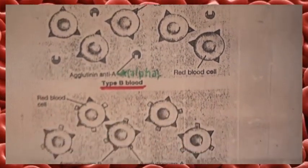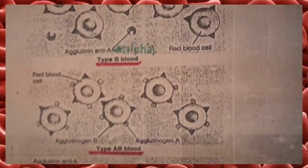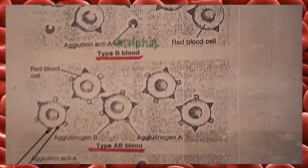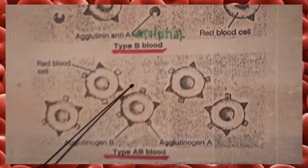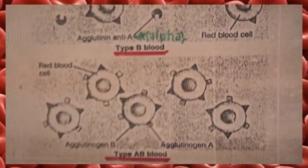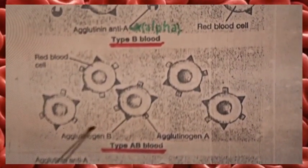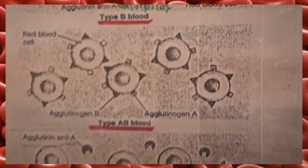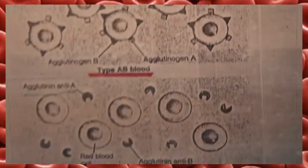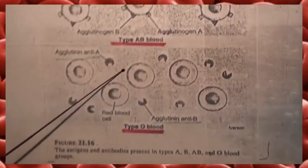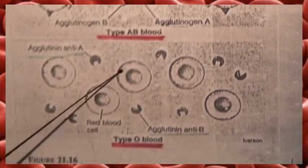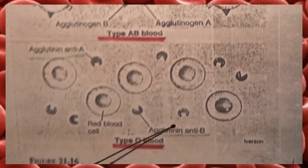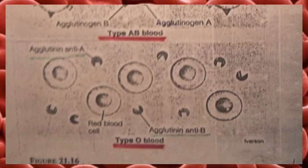Type AB blood has both A and B antigens present on the surface of the red blood cells, but there are no antibodies in the plasma. While type O blood has no antigens on the surface of the red blood cells.